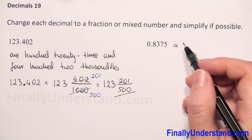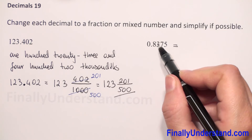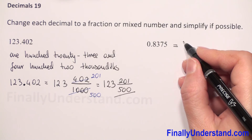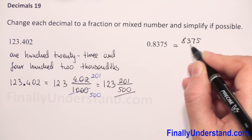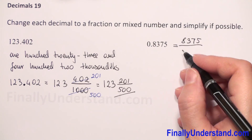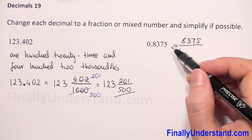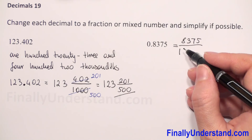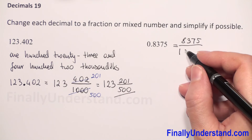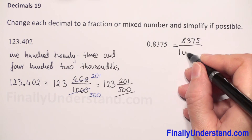Everything after the decimal point we write in our numerator, so it will be 8375. Our denominator will have 1, and now we count how many digits we have: one, two, three, four. So we add four zeros to our denominator, giving us 10000.